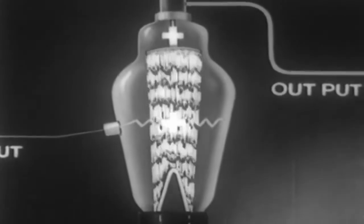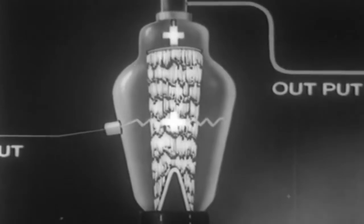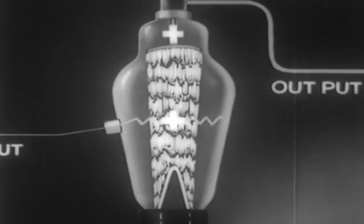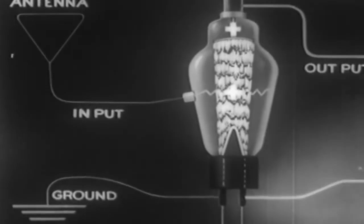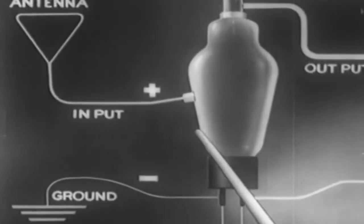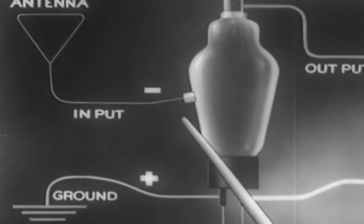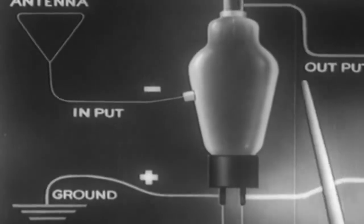Conversely, when the grid is positive, an equally large effect is exerted in increasing the flow of electrons from cathode to anode. The important thing to note here is this: a small amount of power applied at the grid is amplified into a large amount of power in the anode or work circuit.